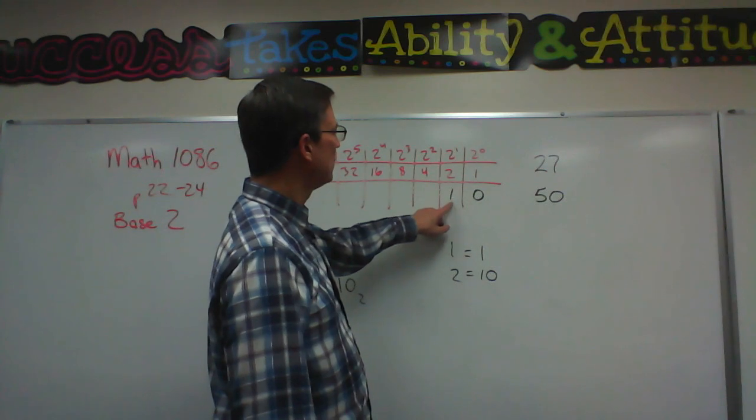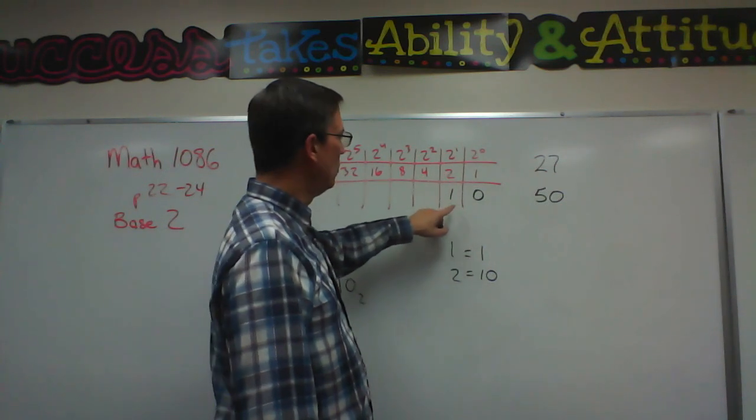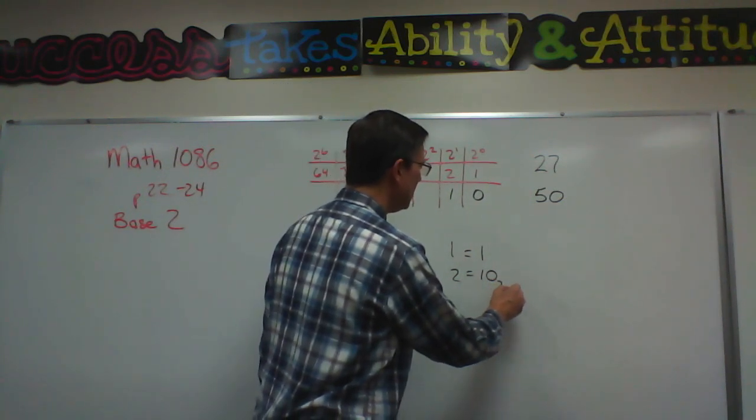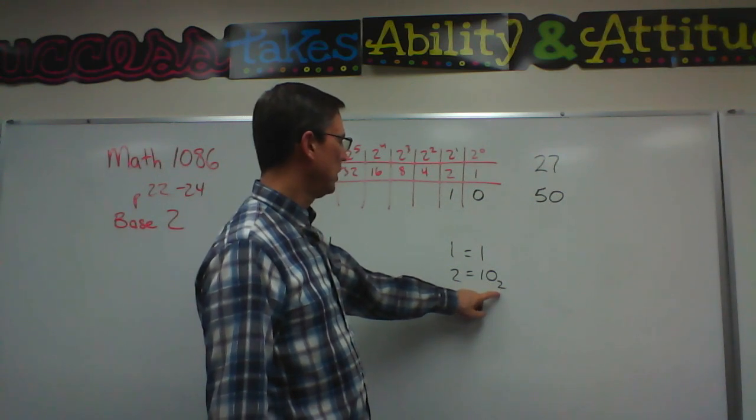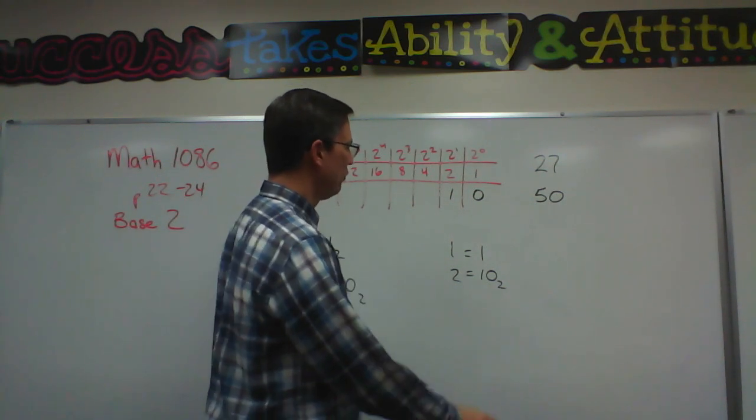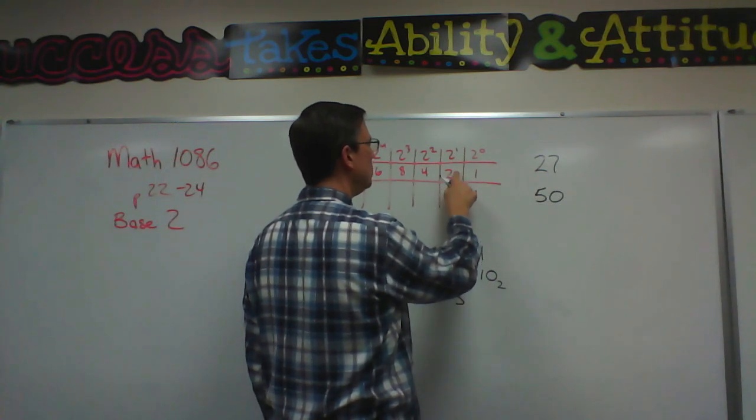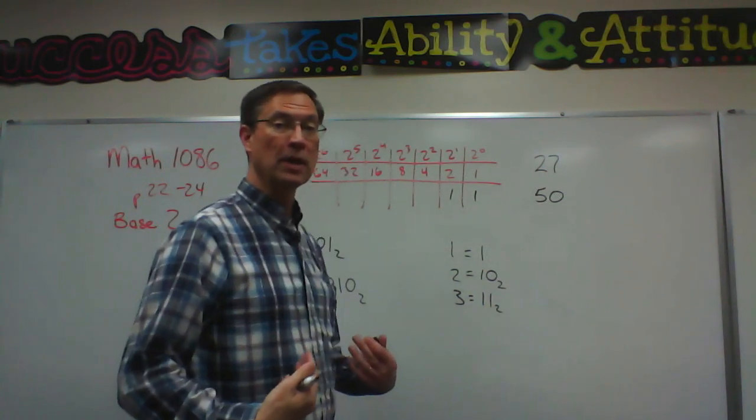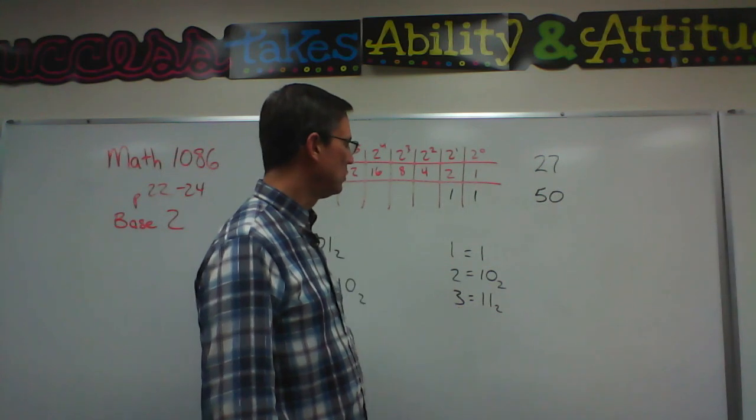So I have a 2 plus I have a 0. So this is not really read as 10. This would be 1, 0 to the base 2. Now the number 3 would then be a 2 plus a 1. So it would look like what we would think of as an 11, but it's not really. It's 1, 1 to the base 2.